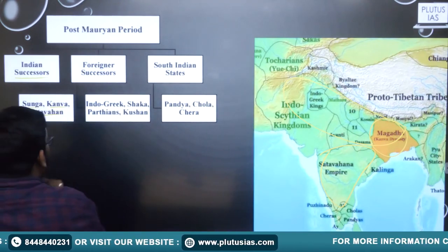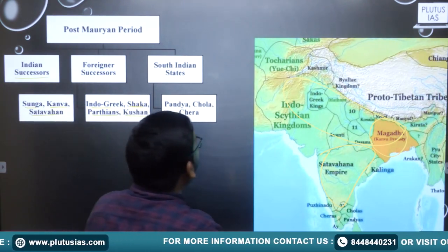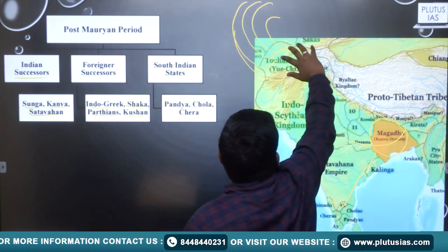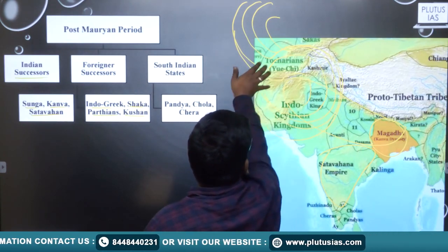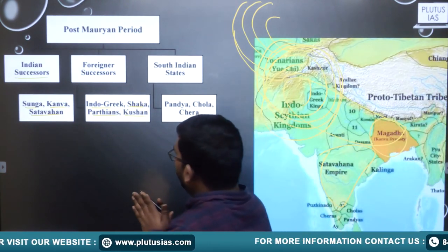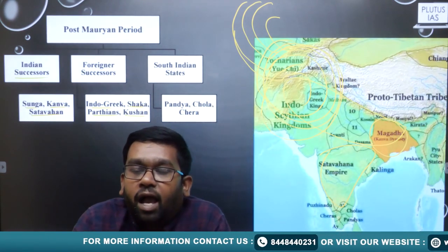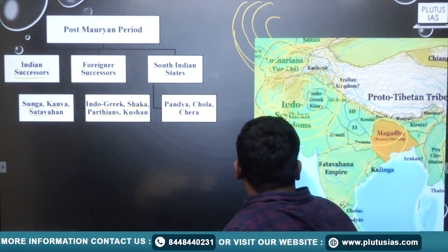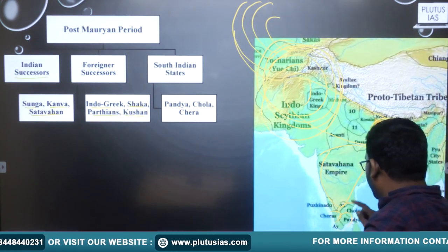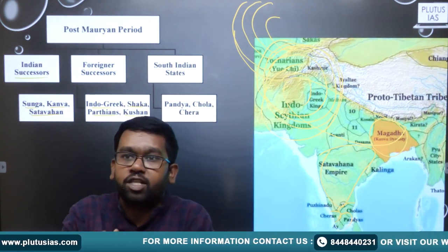There were also foreign successors: Indo-Greeks, Sakas, Parthians, and Kushanas. These people came from the northwest and settled in certain regions of India. Indo-Greeks came first, then Sakas, then Parthians, and then Kushanas. And then we have the South Indian independent states in the Sangam age — Chera, Pandya, and Chola. So these were the three main divisions of the post-Mauryan period in political perspective.